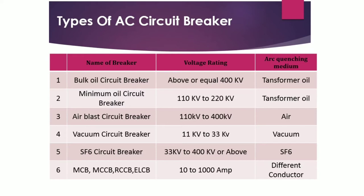Sixth is the group including MCB, MCCB, RCCB, and ELCB. These are used for current ratings from 10 ampere to 1000 ampere, with different types of mechanisms and conductors used for their operation.